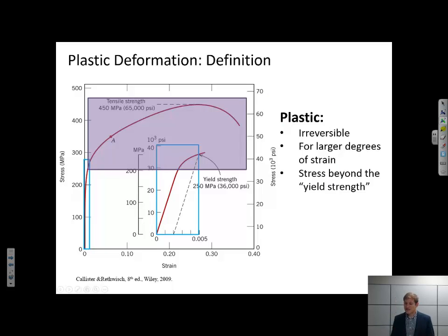Okay, what about plastic deformation? This is the entire rest of the curve where we've exceeded the yield point of the material. Remember, the yield point is defined as the point that serves as the boundary between the elastic and the plastic regions. Plastic deformation is irreversible, so once I have deformed something plastically, it doesn't go back to that same initial state. Typically we see plastic deformation for larger degrees of stress or strain.